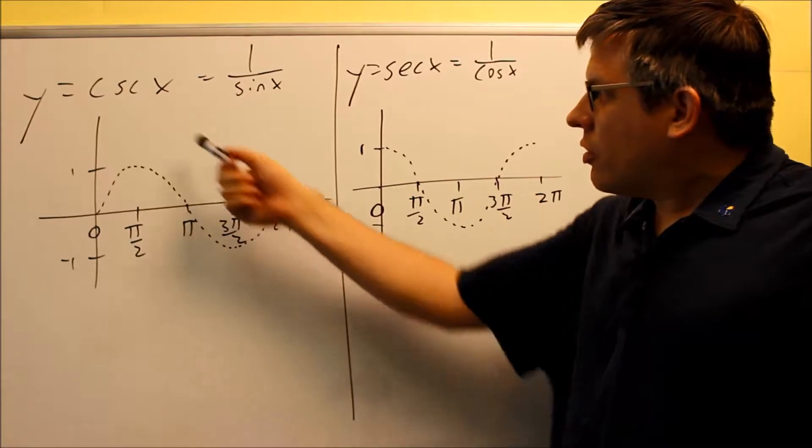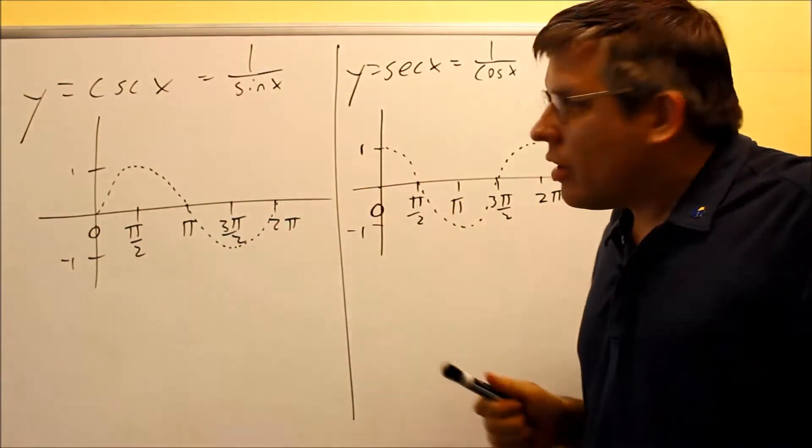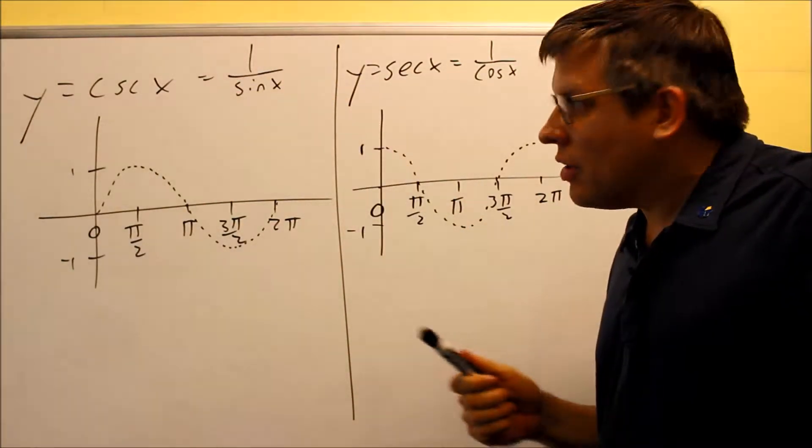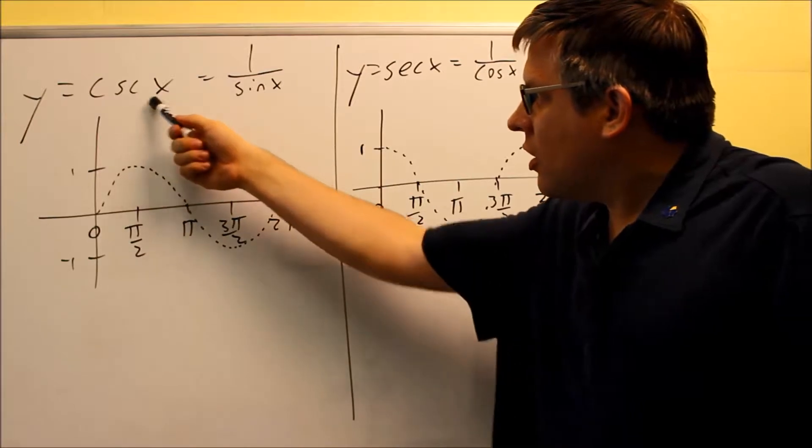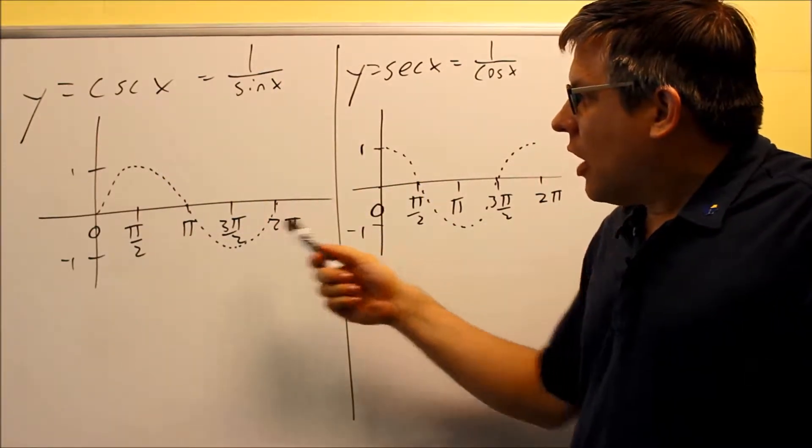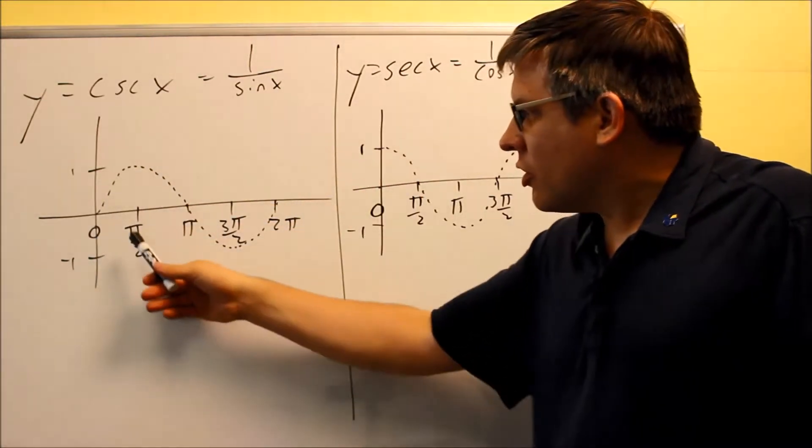So in order to do the cosecant graph, we notice that the definition or the identity for it would be 1 over sine, so that means that the graph of cosecant is going to be related to the sine graph. I've already drawn the sine graph from the previous section. Here's our key points here: 0,